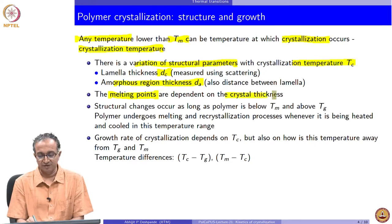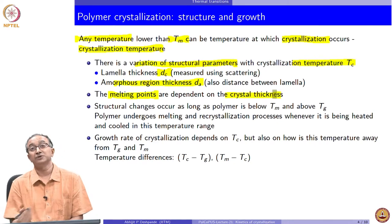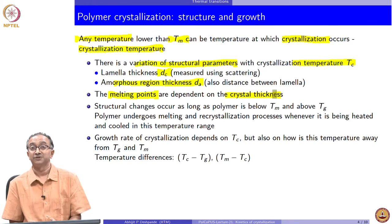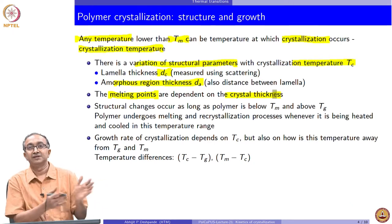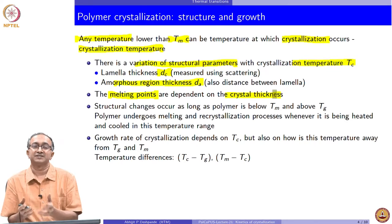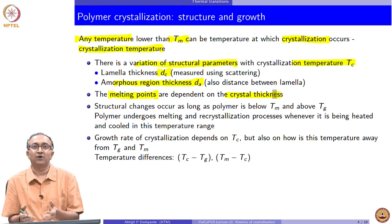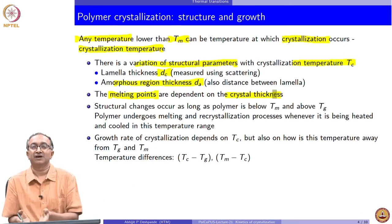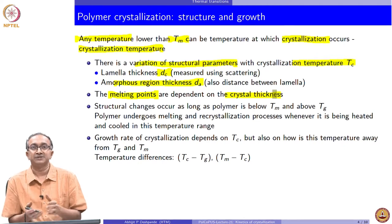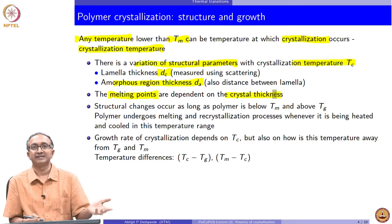The melting point of these crystals is also dependent on crystal thickness — this is a complication in polymers. There is an equilibrium melting temperature, but that is rarely observed. The crystals obtained depend on what temperature crystallization is happening. If crystals are formed at a lower crystallization temperature, they will also melt at a lower melting temperature.